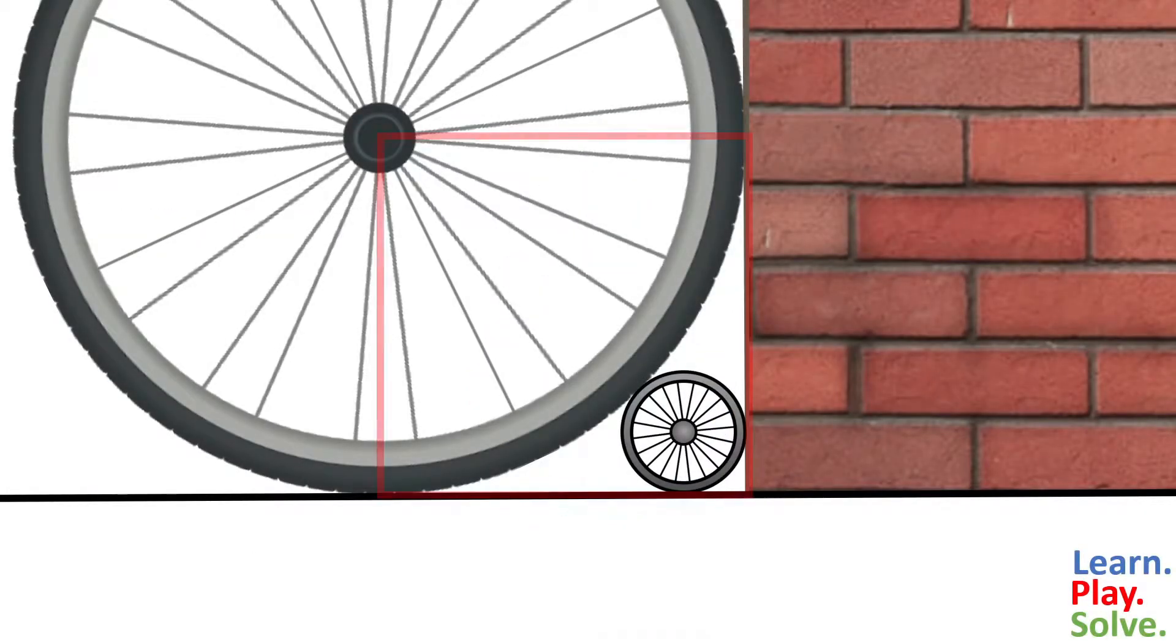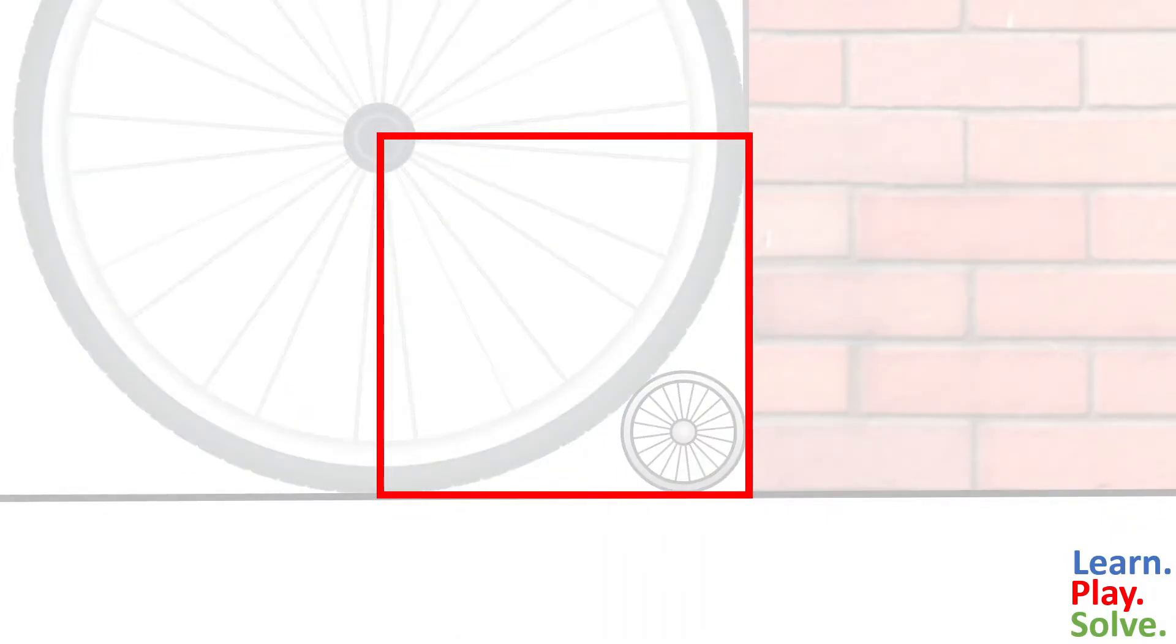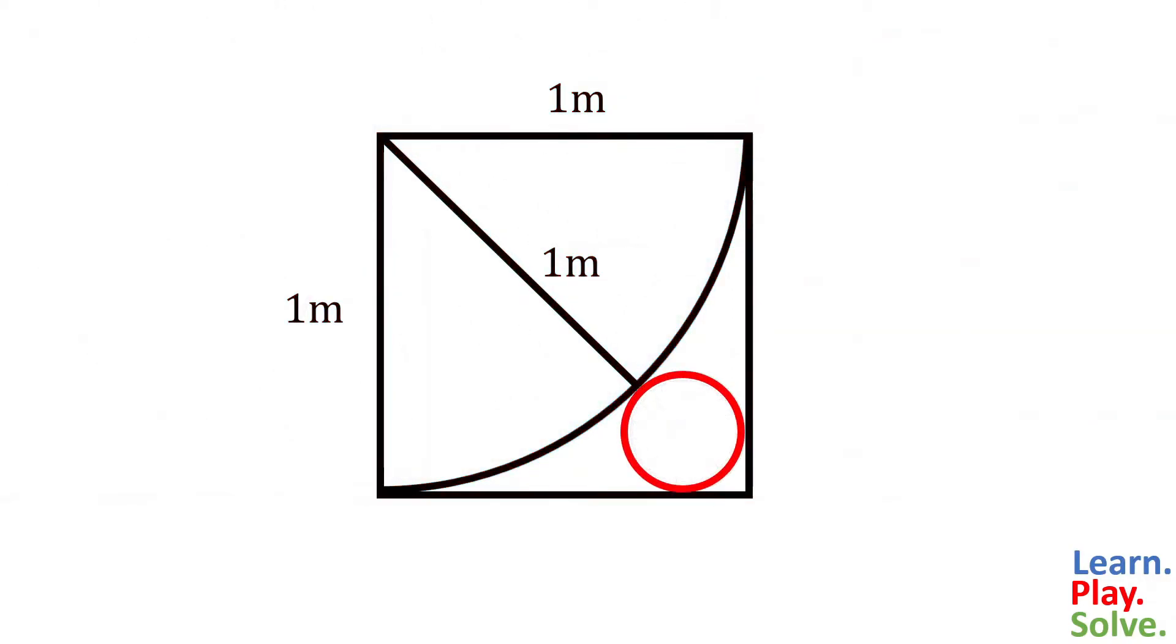We can start by forming a square with sides equal to the radius of the tire. And we're looking for the largest circle that'll fit between the tire and the corner of the square. We'll measure the size of this circle by its radius, r.